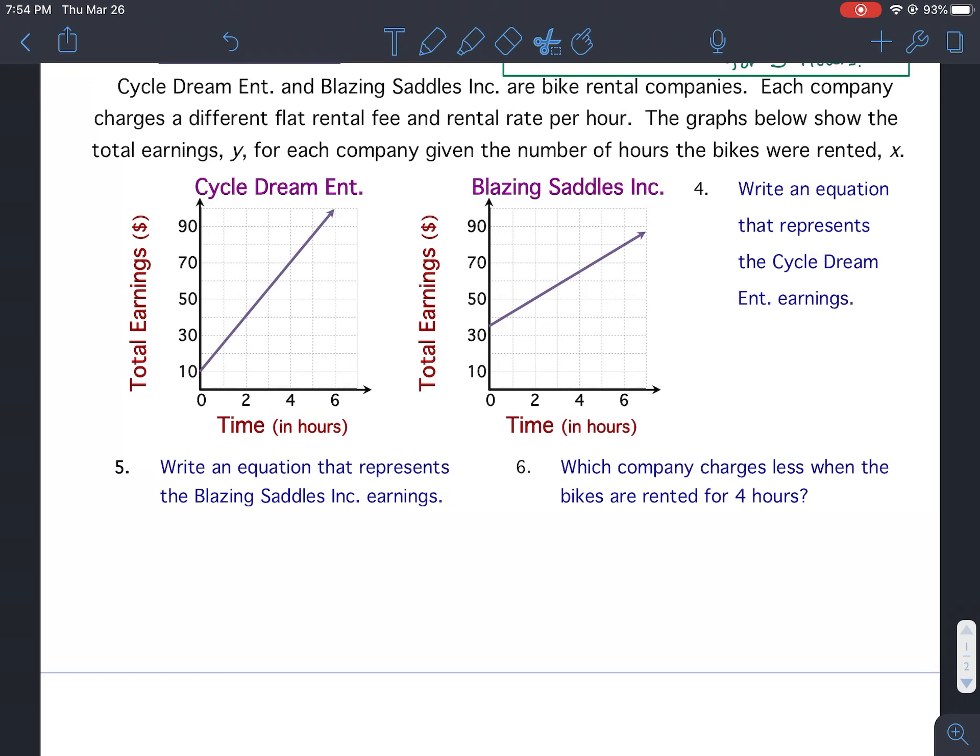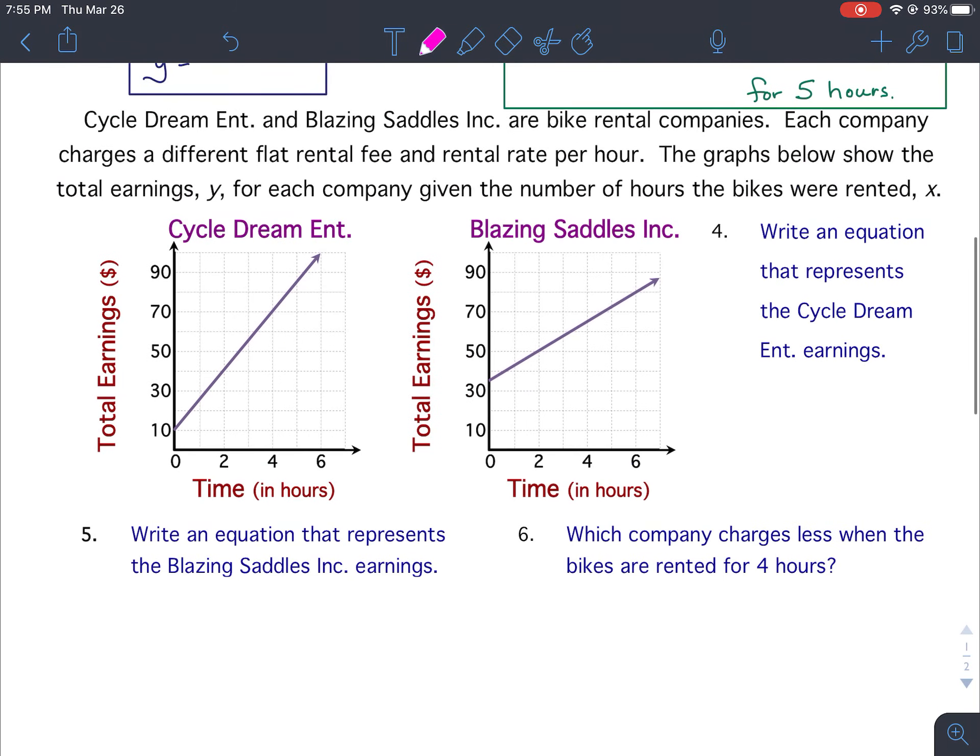Now, on the back, you need to be a little bit careful because Cycle Dream goes with number four, and Blazing Saddles goes with number five, so you've got to make sure you're careful what graph goes with which problem. I've made that mistake before. Okay, so we're going to do number five. Let me read the whole thing first.